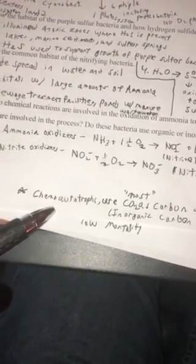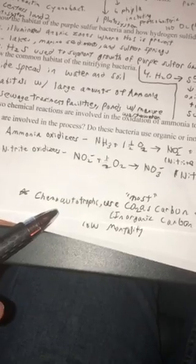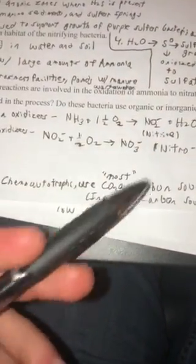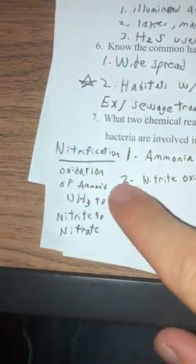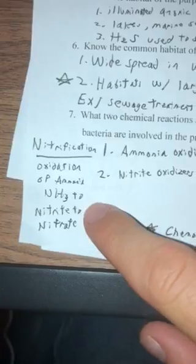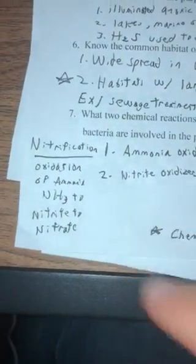Do these bacteria use organic or inorganic carbon sources? These nitrifying bacteria are chemoautotrophs. They use CO2 as a carbon source, so they use inorganic carbon sources. Nitrification is oxidation of ammonia to nitrite to nitrate.